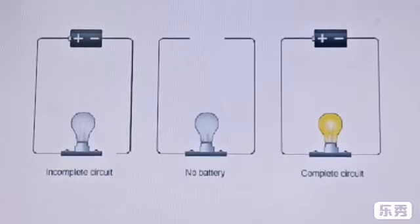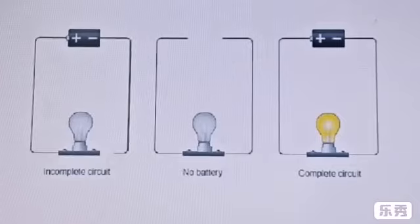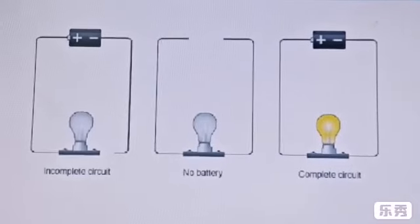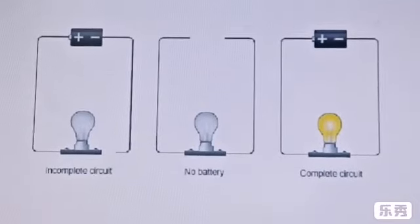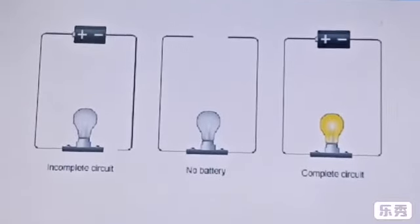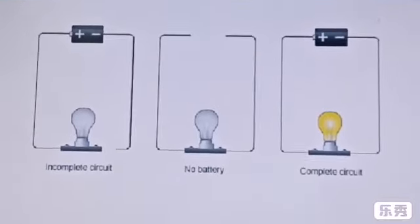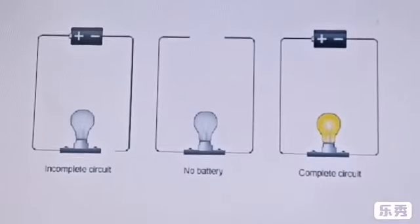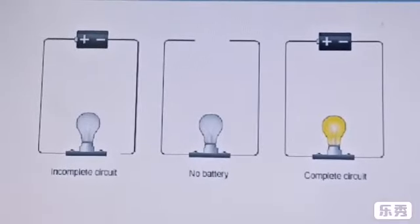Tell me why this happened. Because the electricity going through it was too strong. Children, as you can see here, there are three circuits. First one is an incomplete circuit, the second does not have any battery, and as you can see, the third circuit is a complete circuit, so the bulb is lit up. Thank you.